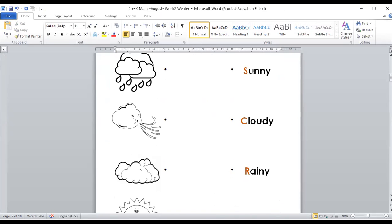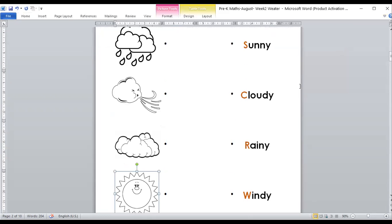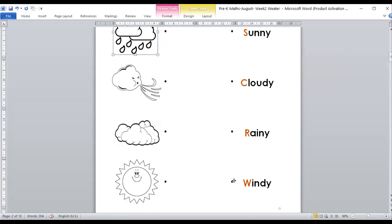Next one, you are going to match. Example: sunny is going to the sun. Cloudy is going to the cloud, match to the cloud. Rainy is going to the rain. Windy is going to the winds. All right.